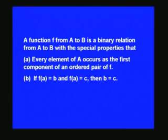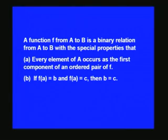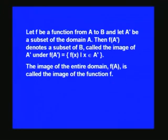We have two conditions: every element of A occurs as the first component of an ordered pair in F, and if F(a) = b and F(a) = c, then b must equal c. You have come across functions in school — continuous functions, differentiable functions — from the set of real numbers to real numbers. Here, after learning relations, we look at functions as a particular case of a relation and will also examine special properties such as inverses of functions.